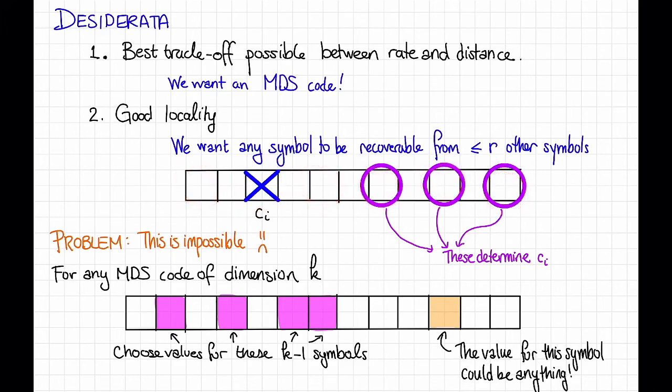And at the point that we query k other symbols of an MDS code, we can recover the entire codeword. Any k symbols determine the codeword of an MDS code. So now we're back in this wasteful setting where we are recovering all of the information only to throw most of it away. So this isn't really local at all. So we cannot have both of these things at once. We can't have an MDS code that has good locality in the sense that any symbol can be recovered from at most r other symbols where r is appreciably less than k.